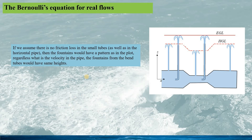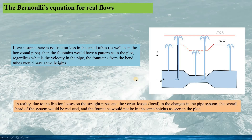If we consider the flow is ideal, there is no friction loss in the small tubes and in the pipe, thus the fountains would have a pattern as seen in this plot. We can see that regardless of the speed in the pipe, the fountain height from the bent tubes would be the same as the energy grade line. In reality, due to the friction of the fluid, there will be losses on the straight pipes and on the local changes of the pipes, such as contraction and expansion, so the overall height of the system would be reduced. If this ideal assumption is not accurate, then how can we solve the practical problem?